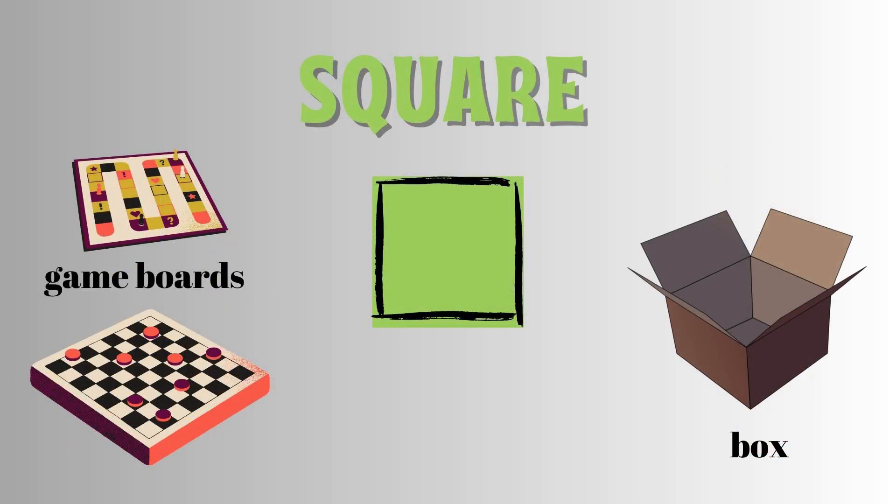Next, we have the square. A square is a shape with four equal sides and four corners. All its angles are 90 degrees. It resembles a box or a game board.